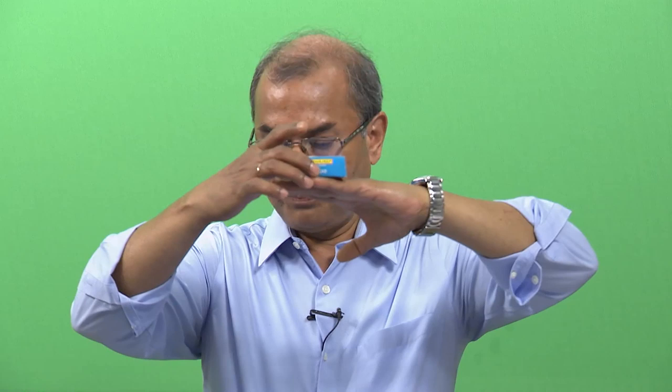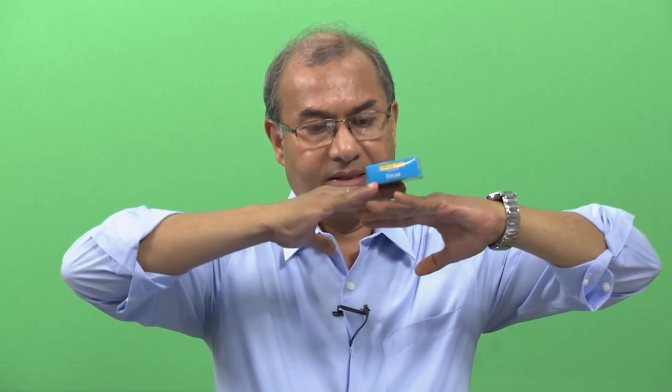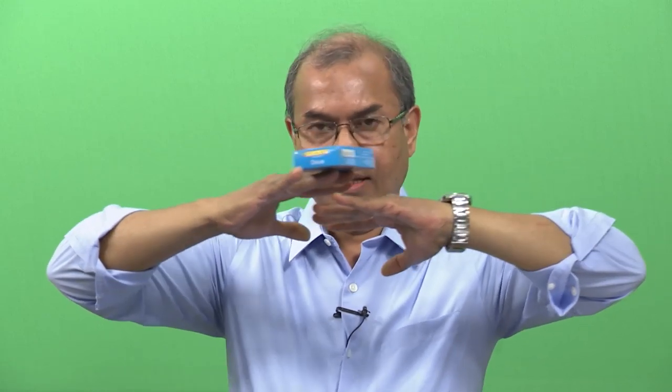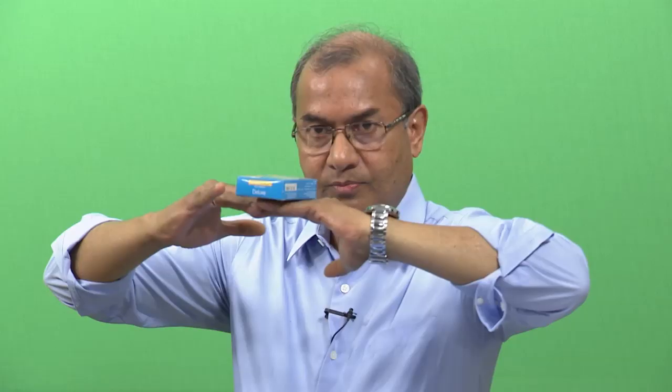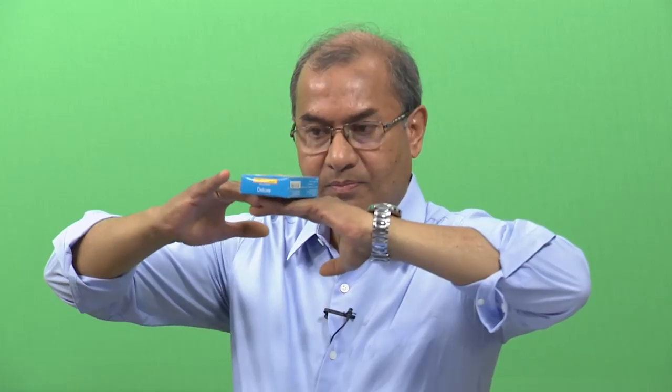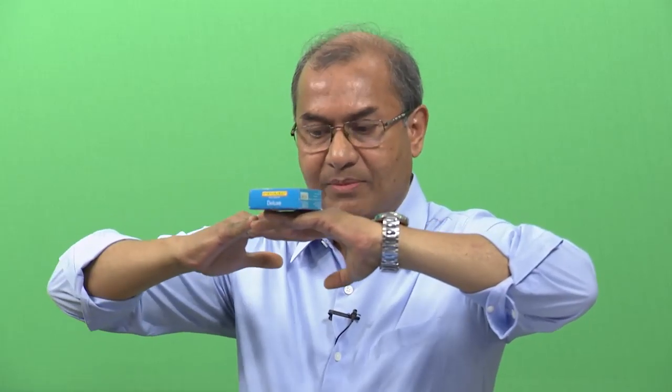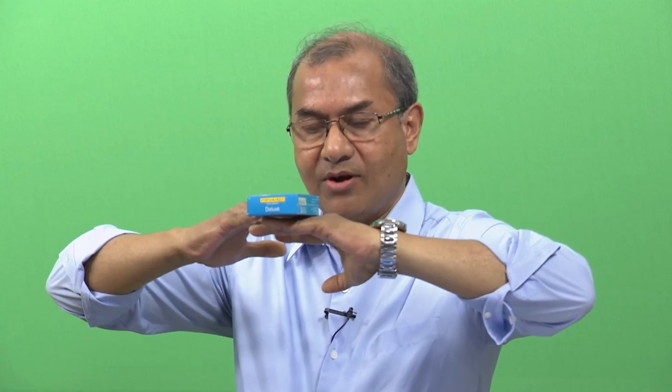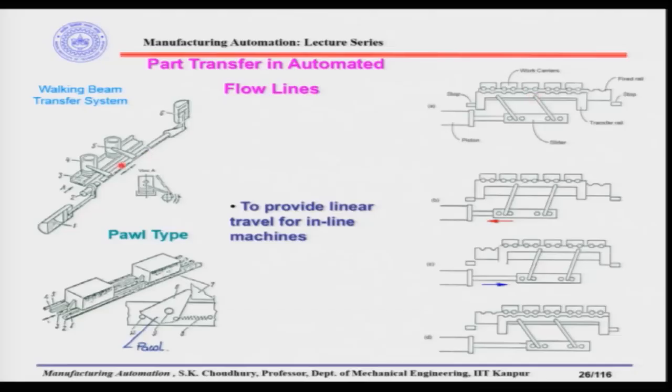Look here: this is the fixed rail where we have the work carrier, and this transfer rail will do like this — it is transferring the work carrier from one place to another place, then coming back, and again it is ready to lift the next one. That is why it is called the walking beam system.